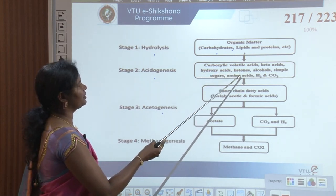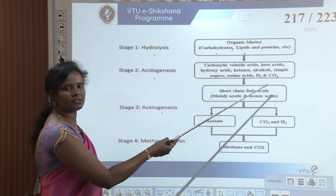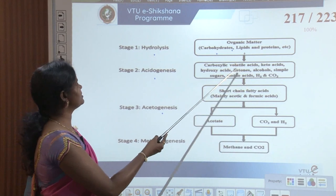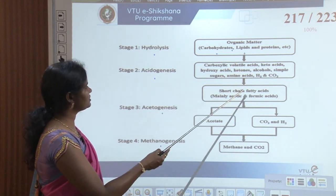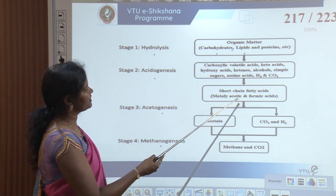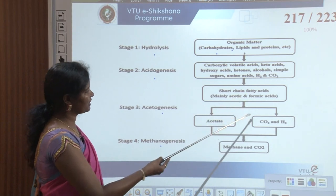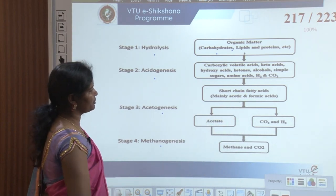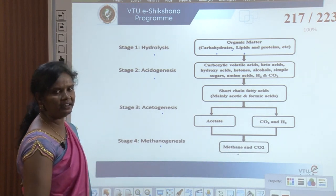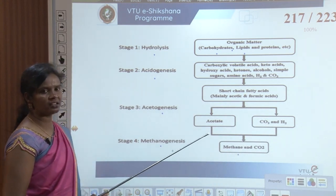Acidogenesis produces carboxylic volatile acids, keto acids, hydroxy acids, ketones, alcohols, simple sugars, amino acids, hydrogen, and carbon dioxide. These convert to short chain fatty acids in acetogenesis, which in turn provide acetate, carbon dioxide, and hydrogen. That in turn produces methane and carbon dioxide — the methanogenesis activity.